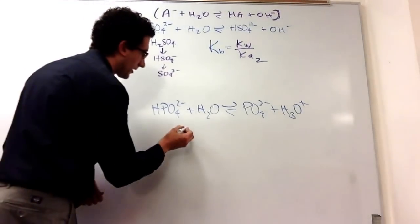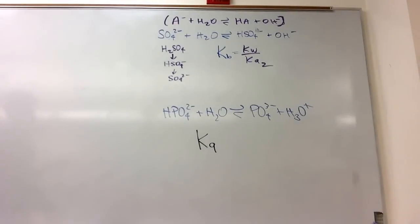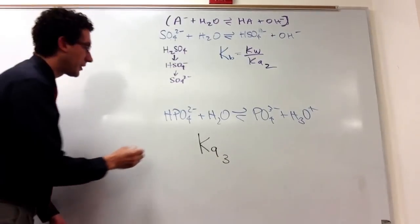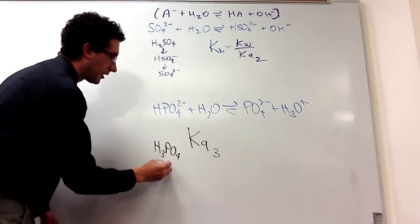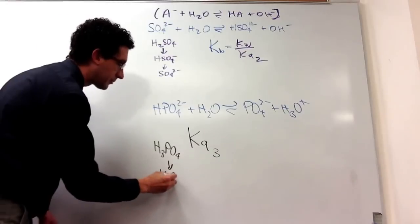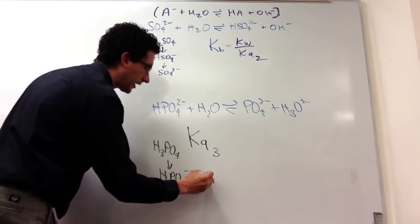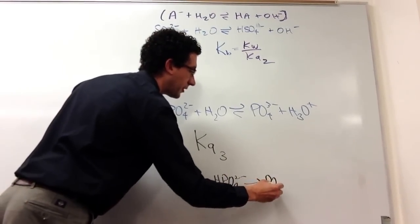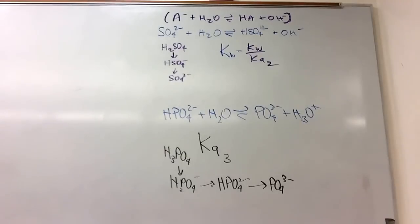So this is KA, and now you just have to figure out which proton, what number of proton is being lost here. It's the third one. So this is KA3, because the original compound was H3PO4. First loss of the proton is H2PO4 minus, second loss is HPO4 2 minus, and third loss is PO4 3 minus.